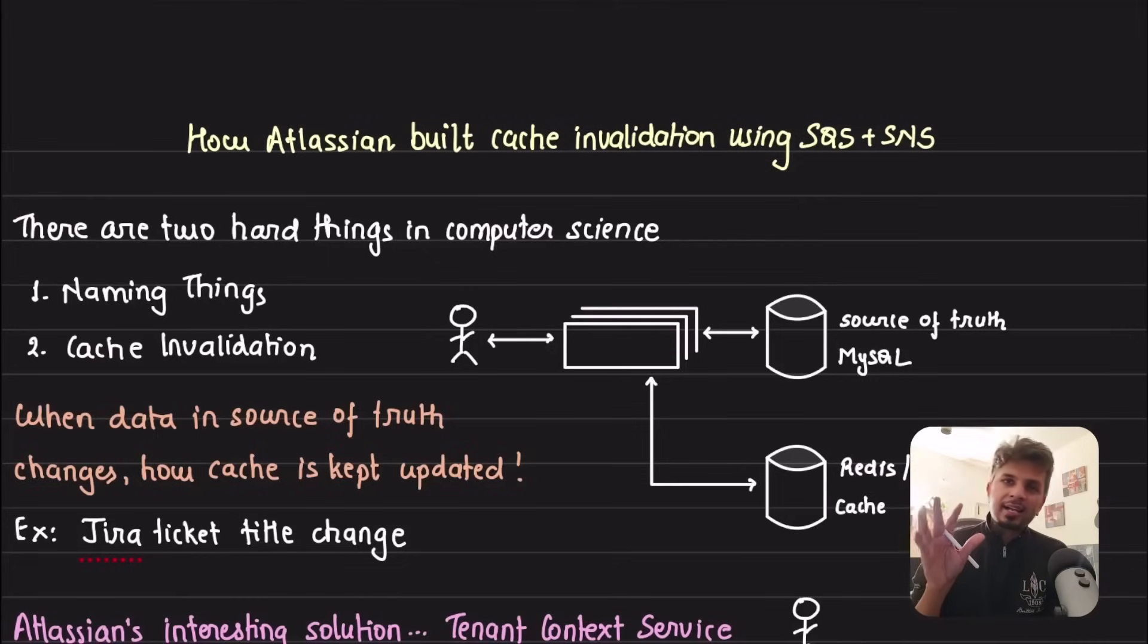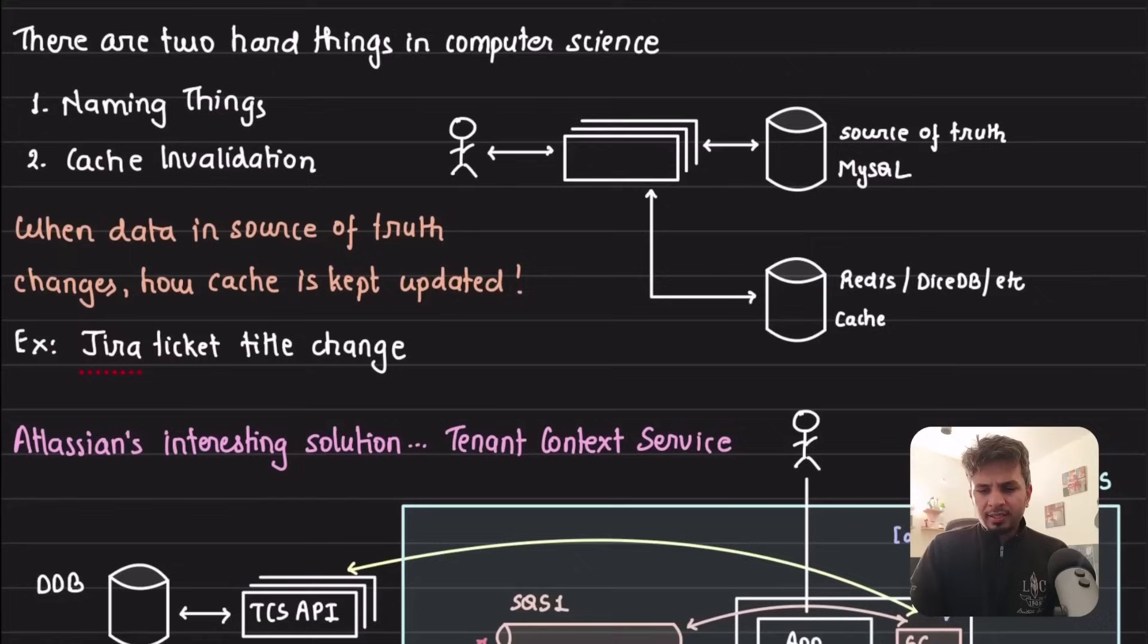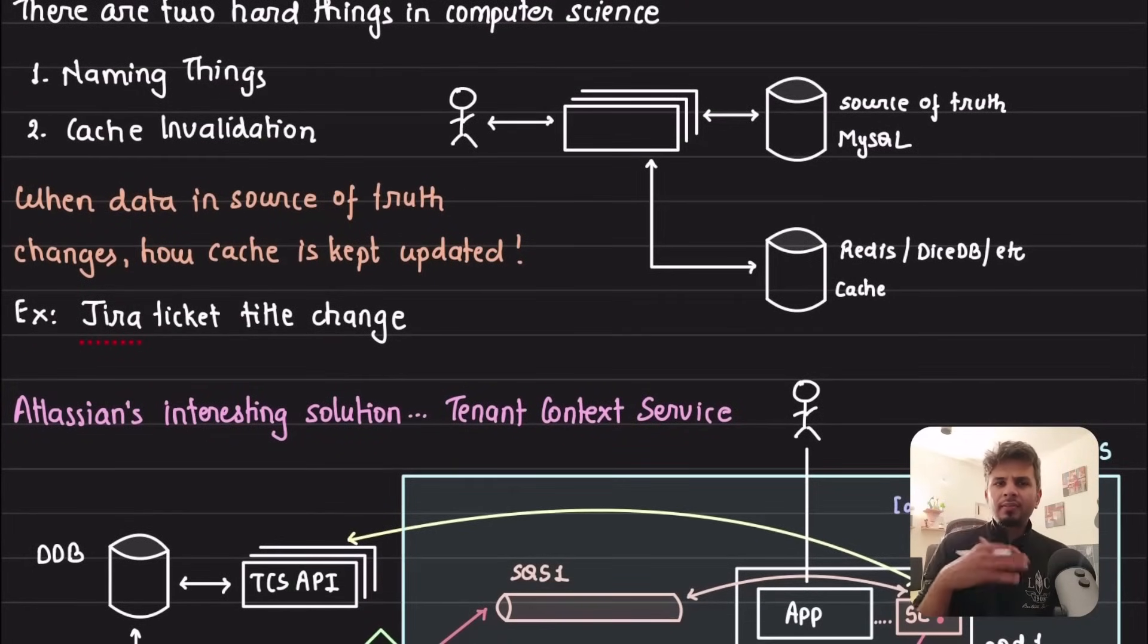Consider this: a pretty standard way for people to use a cache is they have a source of truth like MySQL, Postgres, and they have a cache like Redis, DynamoDB, etc. The whole idea of cache invalidation is whenever the data changes in the source of truth, how do you invalidate the cache so that you don't serve stale data for a longer duration. That's why you need to invalidate the cache.